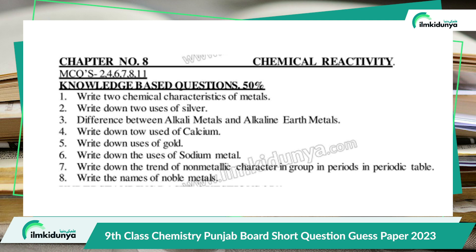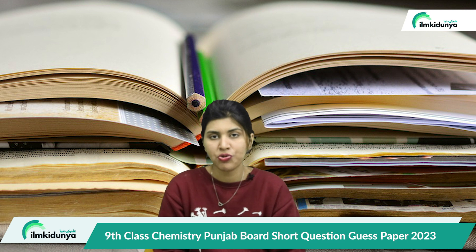Chapter 8 is Chemical Reactivity — your last chapter. The important short questions are: Write two chemical characteristics of metals. Write down two uses of silver. Difference between alkali metals and alkaline earth metals. Write down two uses of calcium. Write down two uses of gold. Write down the uses of sodium metal. Write down the trend of non-metallic character in a group in the periodic table. Write the names of noble metals.